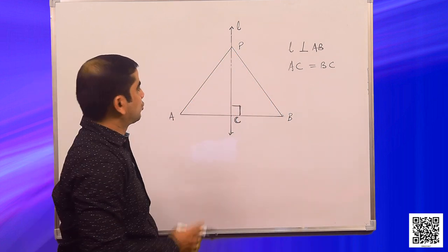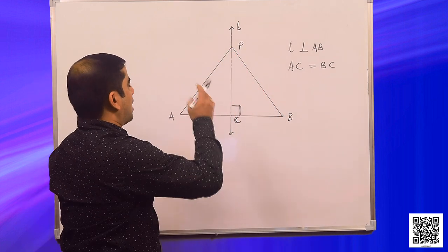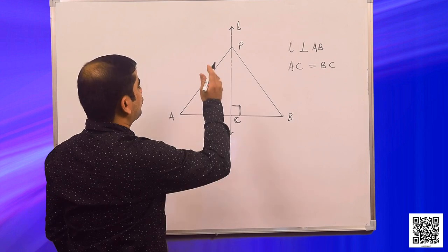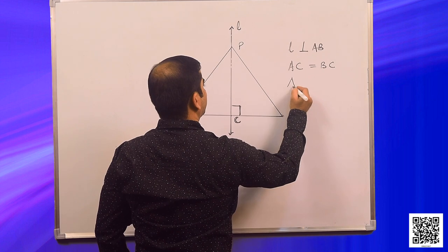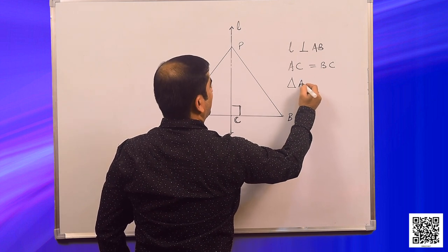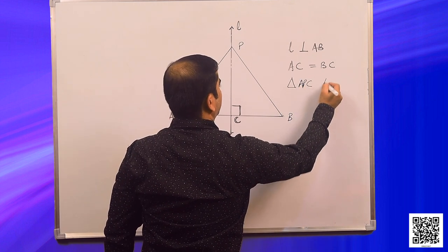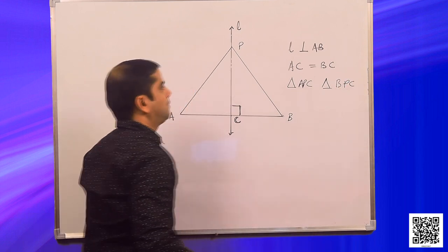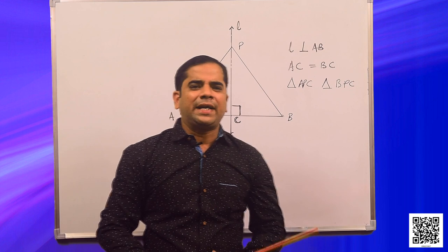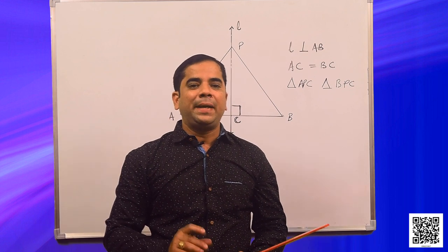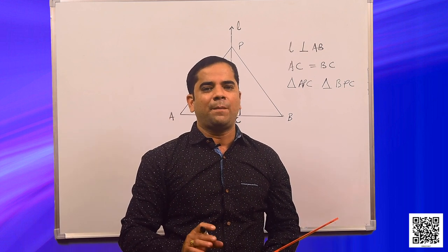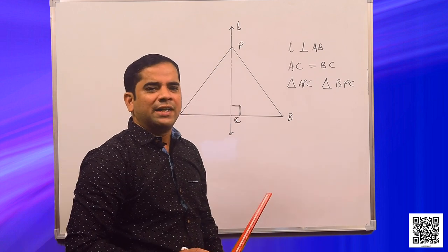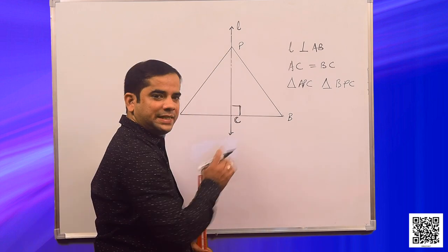Let us join point P with points A and B. We can clearly see that after joining point P with A and B, we have two triangles — triangle APC and triangle BPC. We need to show that P is equidistant from A and B. From our construction, we have found that AC is equal to BC.